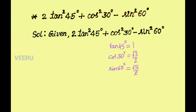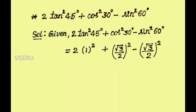We know that tan 45 is 1, cos square 30 degree is root 3 by 2, and sin 60 degree is root 3 by 2. By substituting these values we get 2 into 1 whole square plus root 3 by 2 whole square minus root 3 by 2 whole square. Here plus root 3 by 2 whole square and minus root 3 by 2 whole square get cancelled, so in the next step we get 2 into 1. 1 square means 1, so it is equal to 2.